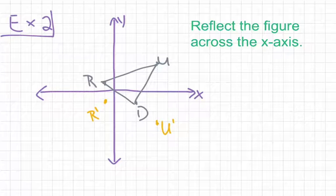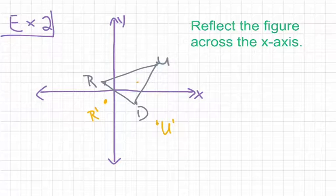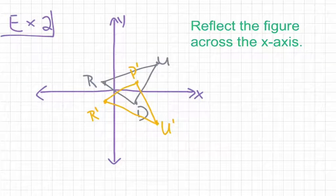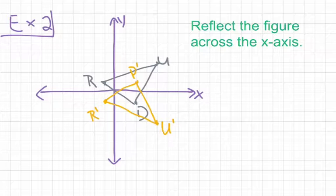With point D, we notice it starts off below the x-axis — 1 unit below. So D' is going to be 1 unit above the x-axis, meaning the figures will overlap. D' goes right there, and that's alright — the figures can overlap. Once we have our three points, we connect them with straight lines, and there we have our reflected figure across the x-axis. Every prime point is the same distance from the x-axis as the original point.